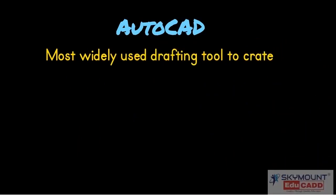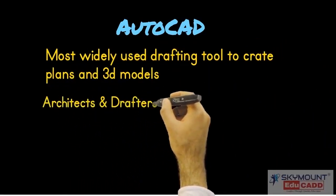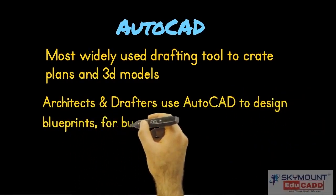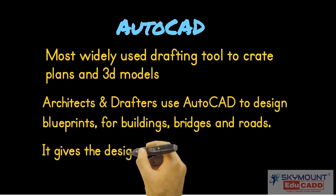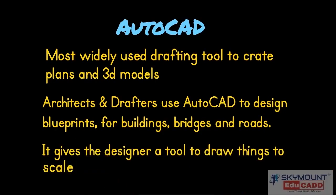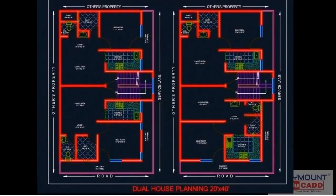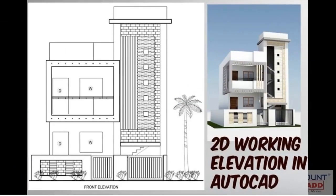AutoCAD — the most widely used drafting tool to create plans and 3D models. Architects and drafters use AutoCAD to design blueprints for buildings, bridges and roads. It gives the designer a tool to draw things to scale. 2D plan done in AutoCAD. 2D elevation done using commands like hatch, gradient, layers. 2D and 3D working elevation in AutoCAD.